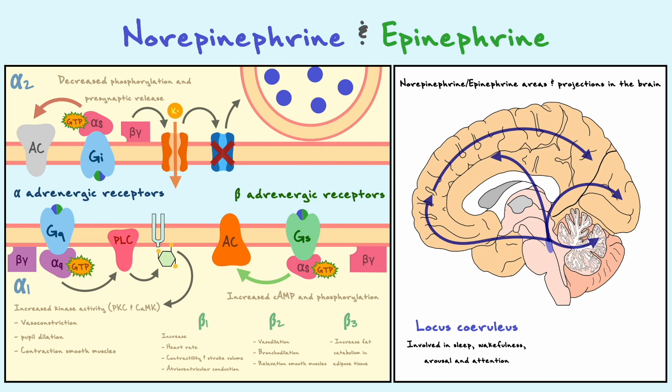Epinephrine neurons in the central nervous system can mostly be found in the medulla, and their projections go mainly to the thalamus and hypothalamus to regulate functions like respiration and cardiac function.